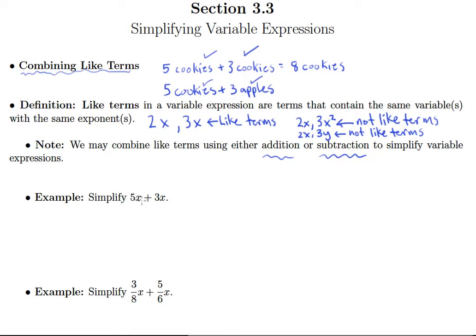So it's real simple here. 5x plus 3x, just like my 5 cookies plus 3 cookies, ends up giving me 8x, just like we had 8 cookies. So we literally just do the sum of the coefficients to give us the new coefficient.